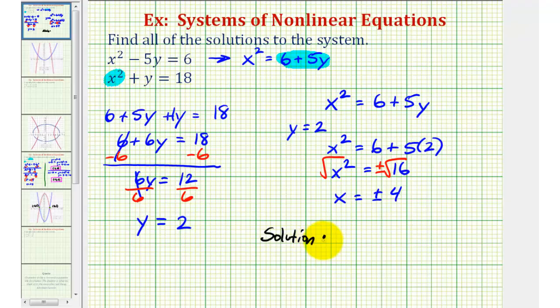We'll list them as ordered pairs. When x is positive four, y is positive two. Or when x is negative four, y is also positive two.